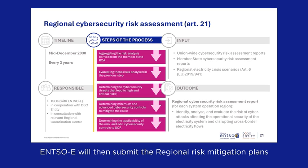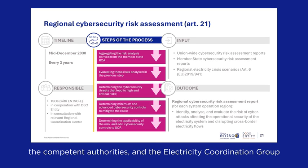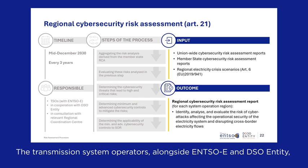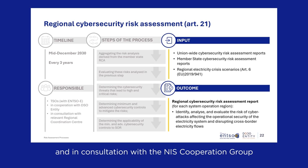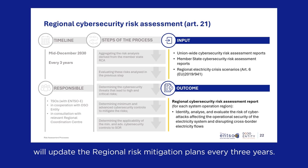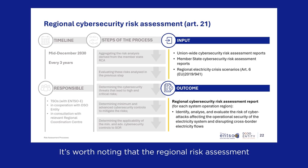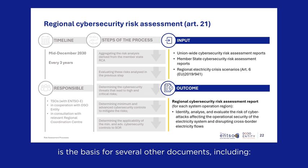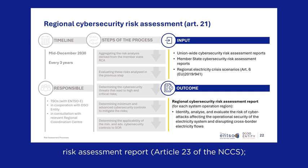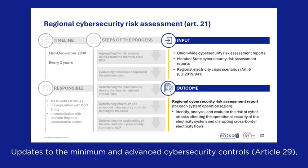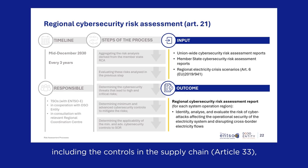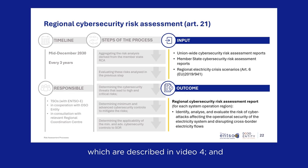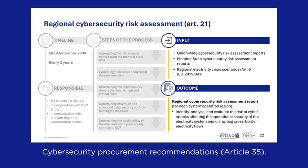ENTSOE will submit the regional risk mitigation plans to the relevant transmission system operators, the competent authorities, and the electricity coordination group, who can then recommend amendments. The transmission system operators, alongside ENTSOE and DSO Entity and in consultation with the NIS Cooperation Group, will update the regional risk mitigation plans every three years. The regional risk assessment is the basis for several other documents, including: regional risk mitigation plans (Article 22 of the NCCS), comprehensive cross-border electricity cybersecurity risk assessment reports (Article 23), updates to minimum and advanced cybersecurity controls (Article 29), including supply chain controls (Article 33, described in video four), and cybersecurity procurement recommendations (Article 35).